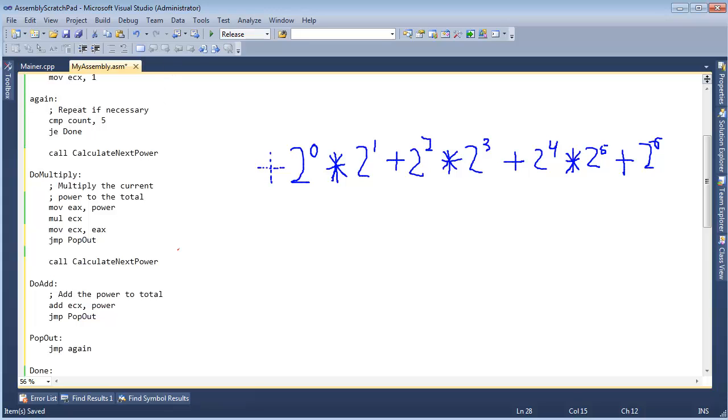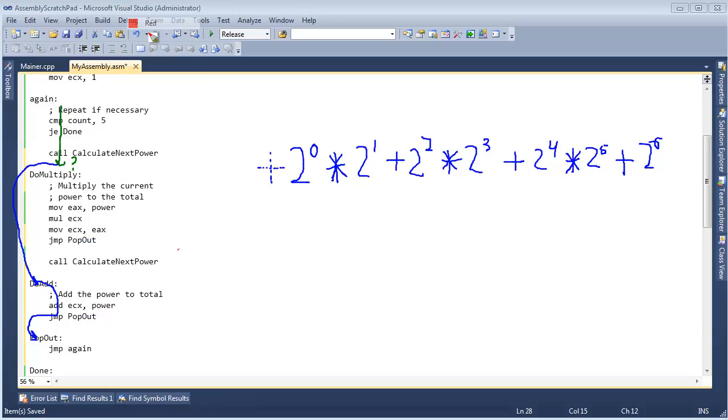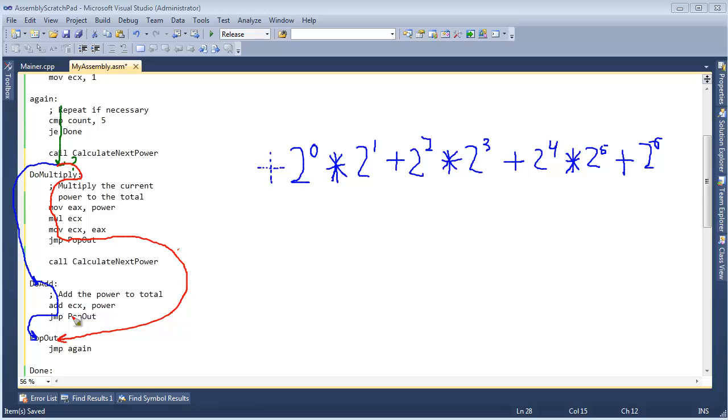So let me just illustrate that one more time. We come in, we begin the iteration of our loop. Right here, we need to ask ourselves a question. If we're at an even power, then we're going to jump to do add. Do add will run, and then it will jump to pop-out. If we're at an odd power, we're going to jump to do multiply, do the multiply code, and then jump back out to pop-out. So both of our rabbits will meet at the exact same location. Let me pause the video and erase all that off the screen now.